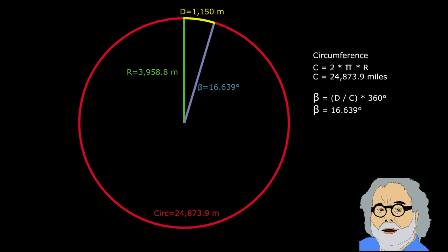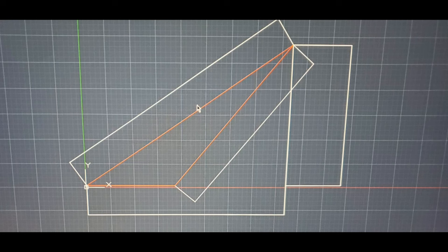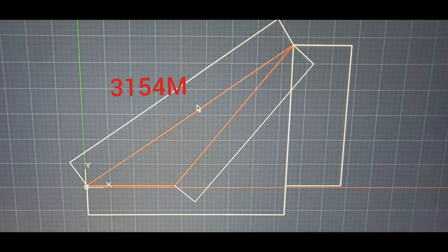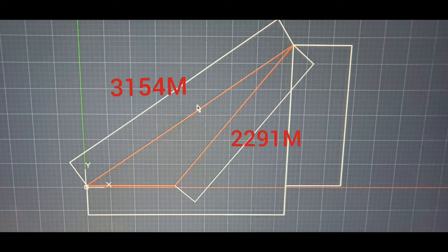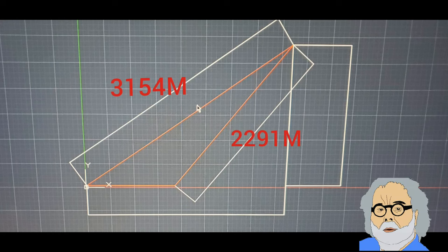This 16.639 degrees was very close to the difference of 16 degrees between both angles Anthony Baer had mentioned. And the top orange line is from Michigan to the sun, which is 3154 miles, and that's on a 34 degree angle. And then the second orange line is from Florida to the sun, which is 2291 miles, and that's on a 50 degree angle.